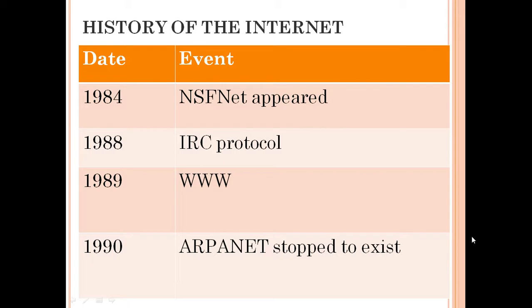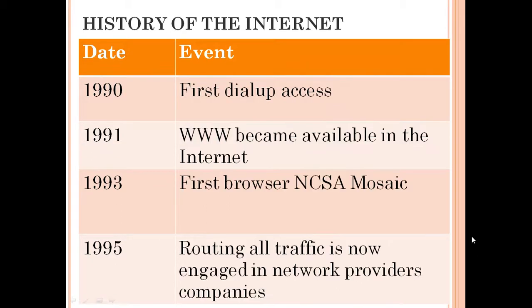In 1988, IRC protocol. In 1989, World Wide Web. In 1990, ARPANET stopped to exist. In 1990, first developed access. In 1991, World Wide Web became available on the Internet. In 1993, first browser NCSA Mosaic. In 1995, routing all traffic is now engaged in network provider companies.